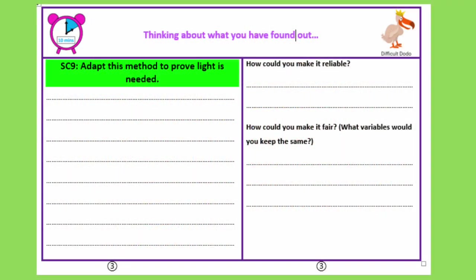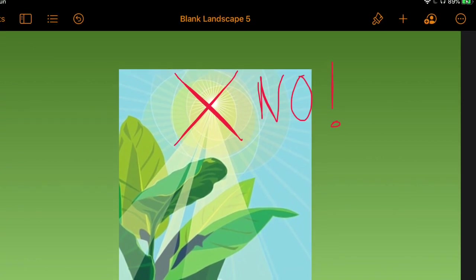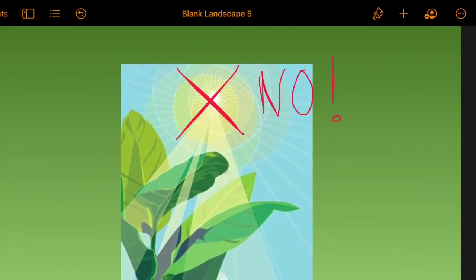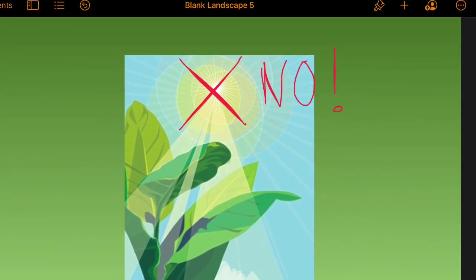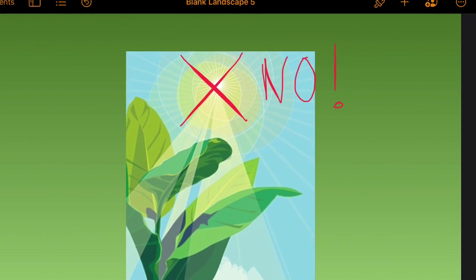We're now going to move on to SC9: adapt this method to prove light is needed. I would like you to come up with as many ways as you can — there are three that I can think of — of how you could prepare the leaf beforehand so that you had one that had been in light and one that hadn't. Mr French told you about one, so you should be able to get at least one. We'll go through the answers in a minute.